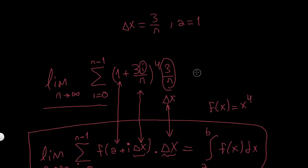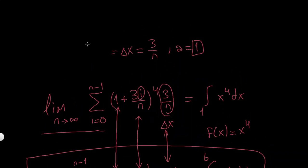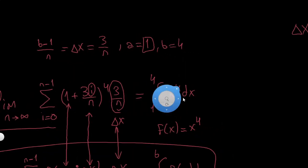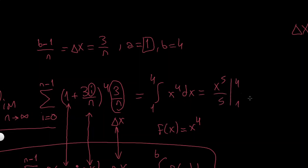I know that f(a + i·delta x) equals this thing to the power of 4, so my f(x) = x⁴. I can say this is going to be equal to the integral of x⁴ dx. What are my bounds? I found a = 1. I know delta x = (b − a)/n, so (b − 1)/n = 3/n, therefore b − 1 = 3 and b = 4. So the integral goes from 1 to 4, and evaluating it gives x⁵/5 from 1 to 4, which equals (4⁵ − 1)/5.